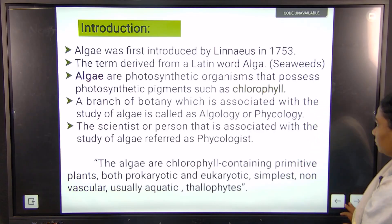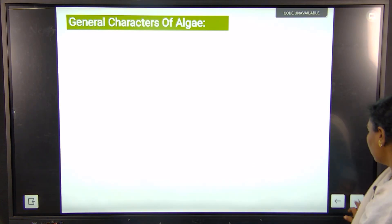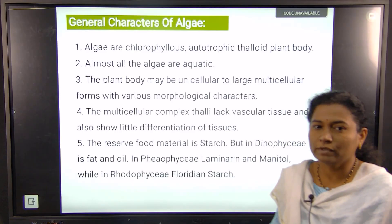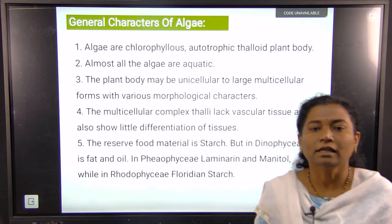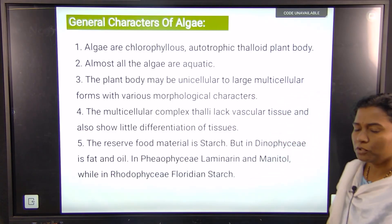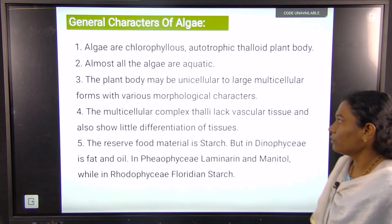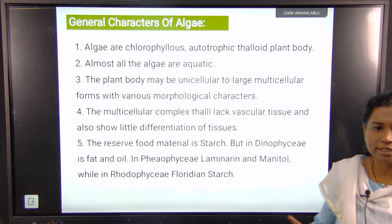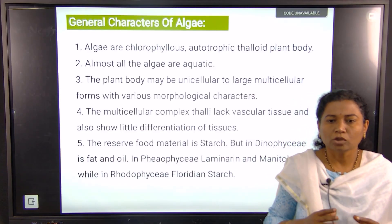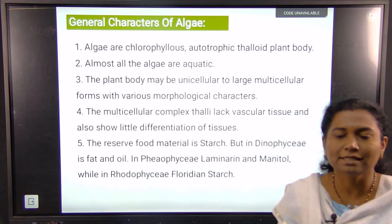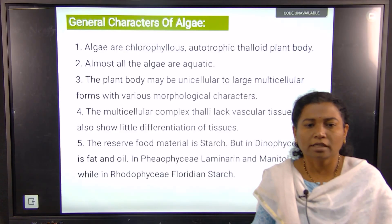Regarding general characters: algae contain chlorophyll pigment, meaning they are chlorophyllous, autotrophic, and have a thalloid plant body. Almost all algae are aquatic, and the plant body ranges from simple unicellular to large multicellular forms with various morphological characters.